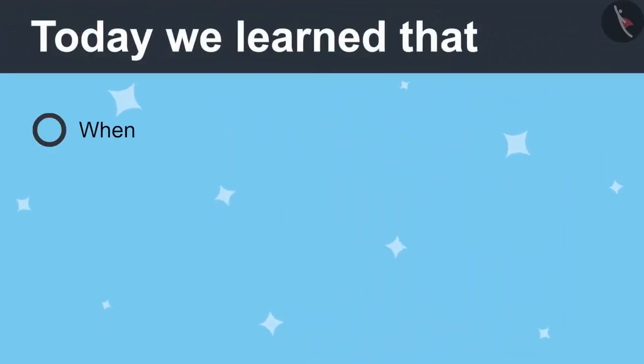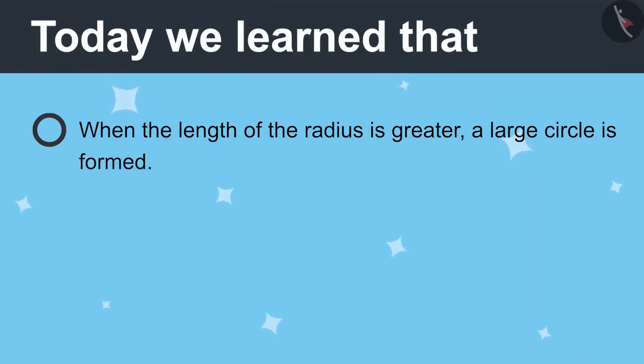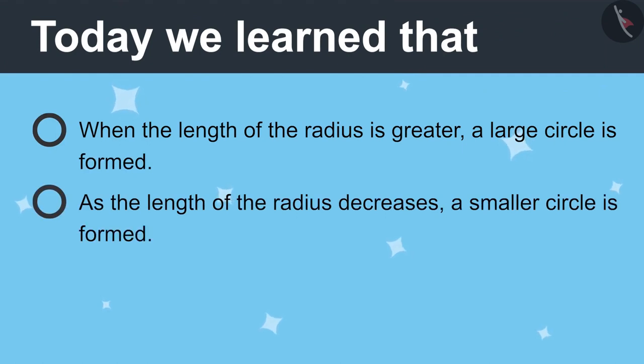Today we learned, when the length of the radius is greater, a large circle is formed. As the length of the radius decreases, a small circle is formed. And there are many radius in one circle.